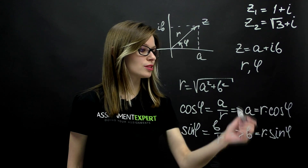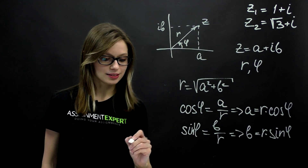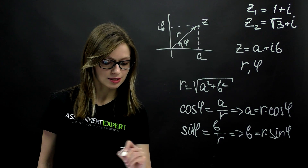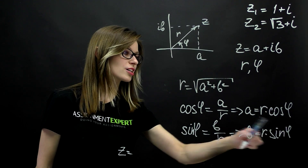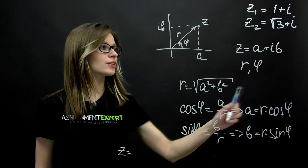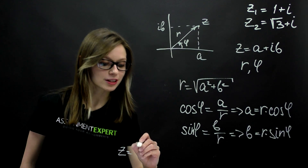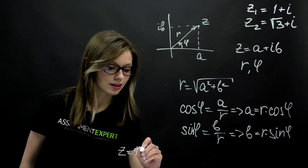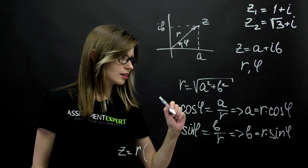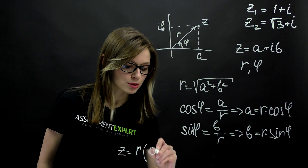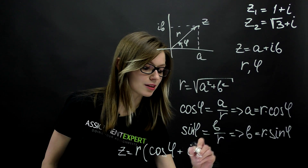If we substitute these expressions, we obtain that z equals a plus ib, which is r times cosine of phi plus i times r times sine of phi. Factoring r out, we are left with r times cosine of phi plus i times sine of phi.